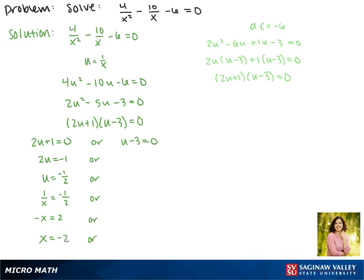Now in our other equation, we'll add 3 to both sides, which gives us u equals 3, and again we'll make that substitution. So 1 over x equals 3. Cross multiplying gives us 3x equals 1. Dividing both sides by 3, we get that x equals 1 third.